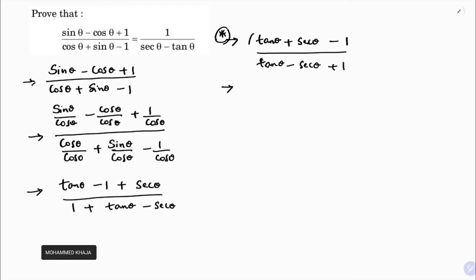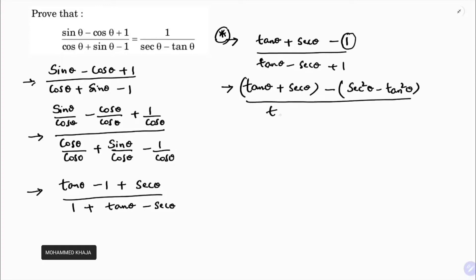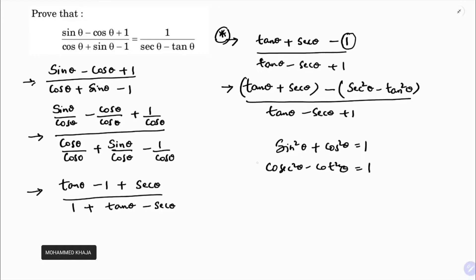Sometimes they may ask a question from this form as well. Now, in the numerator only, I'll replace 1 using the identity sec²θ - tan²θ, since sec²θ - tan²θ = 1. Note: if the question were in terms of cos and cot, I would use cosec²θ - cot²θ = 1 instead, but since the question is in terms of sec and tan, I use sec²θ - tan²θ in place of 1.